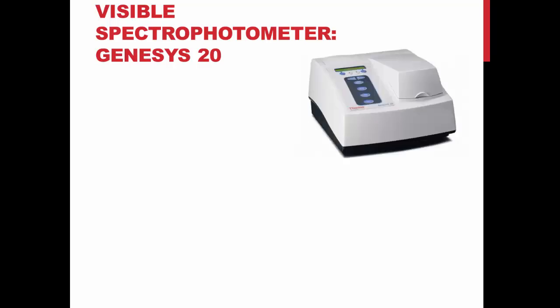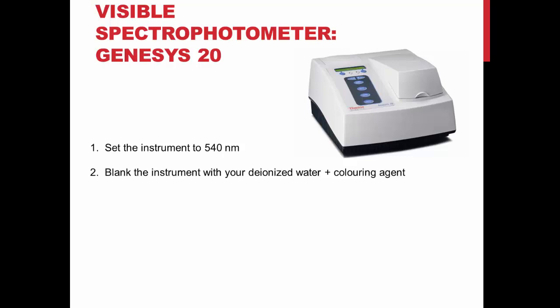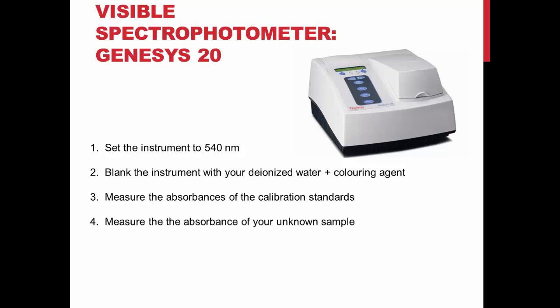To measure the absorbance of your standards, you will need to use a visible spectrophotometer, the Genesis 20. First, set the instrument to 540 nm using the interface on the left of the instrument. You then blank the instrument with your deionized water and coloring agent. Now you can measure the absorbances of the calibration standards. You do not need to adjust anything on the interface — simply remove the blank and insert each standard. You will then measure the absorbance of your unknown sample and repeat steps 2 to 4. An additional video is available on how to use the instrument; however, your instructor will demonstrate this in the lab.